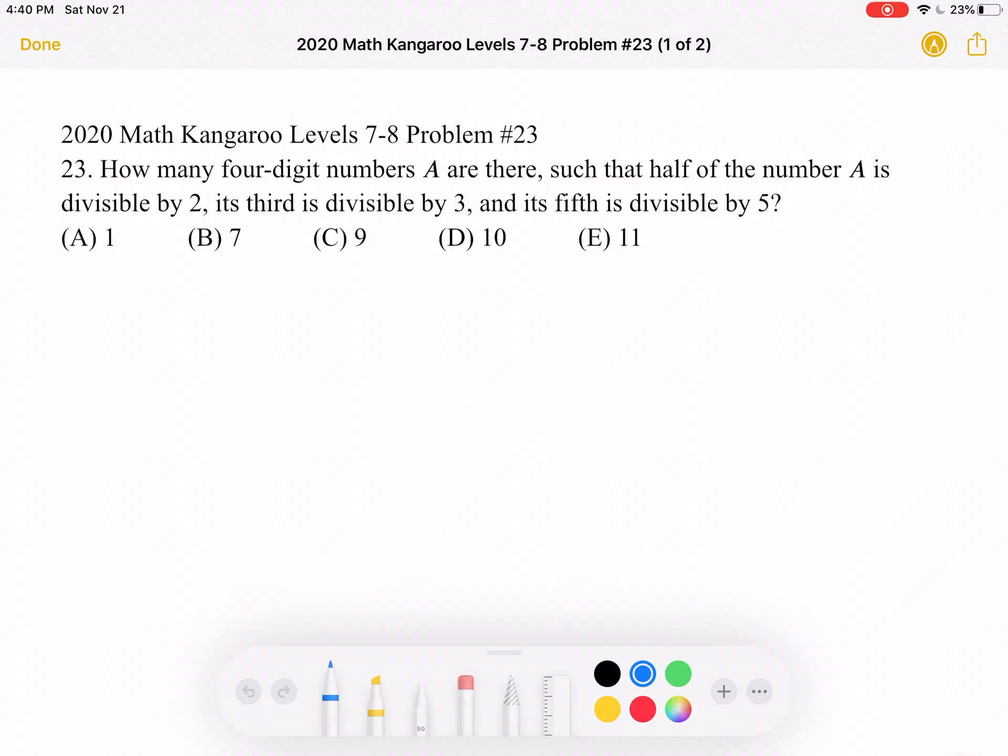This is the 2020 Math Kangaroo Level 7-8 Problem Number 23. How many four-digit numbers A are there, such that half of the number A is divisible by 2, its third is divisible by 3, and its fifth is divisible by 5?